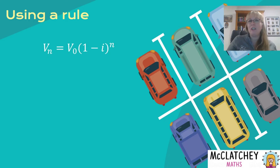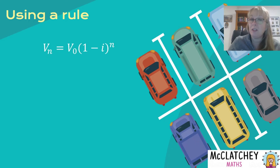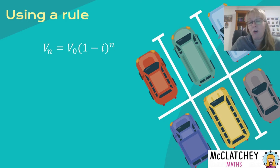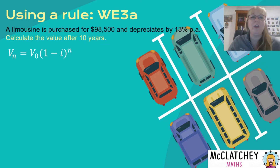Now let's look at the general rule for depreciation. It looks very similar to the compound interest rule on your formula sheet. Instead of A for the amount at the end, you have Vn; instead of P for principal, you have V0. The power n remains the same. The key difference is that inside the brackets it's 1 minus i instead of 1 plus i. So you can adapt your compound interest rule for reducing balance depreciation — just change the plus to a minus.